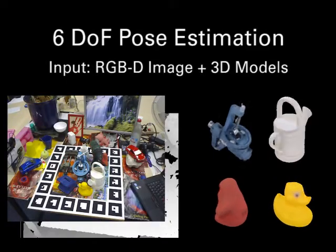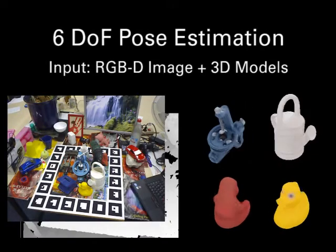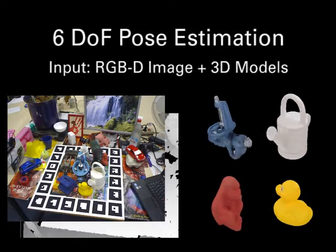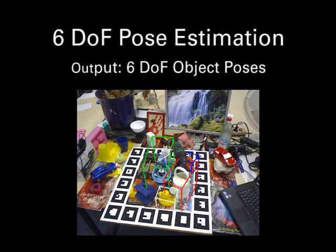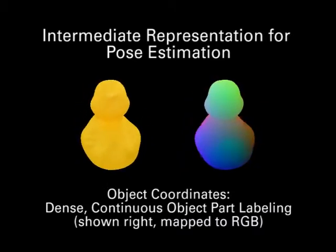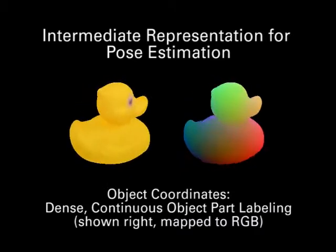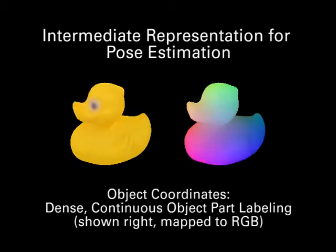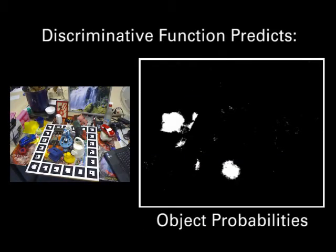Given a RGBD image and 3D models of object instances, we estimate accurate 6DoF poses of these instances in the depicted scene. To do so, we utilize object coordinates, which are dense and continuous object-part labelings. Given an input image, a discriminative function estimates object probabilities per pixel, here shown for the duck.